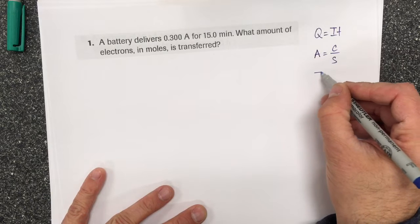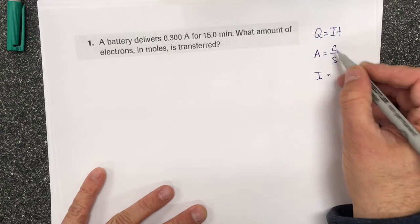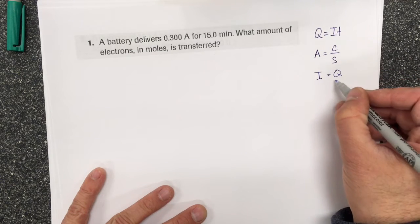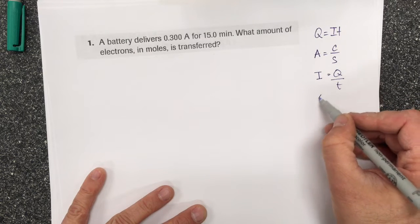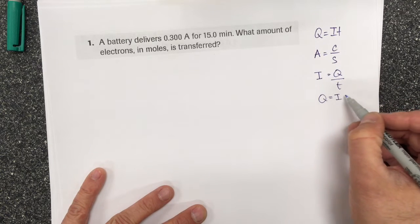The symbol for current is I, coulombs the symbol is Q, and seconds is time. So if I go back and rearrange that, Q equals I times T.